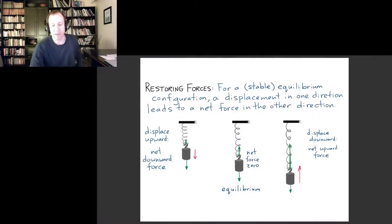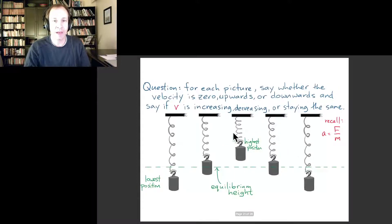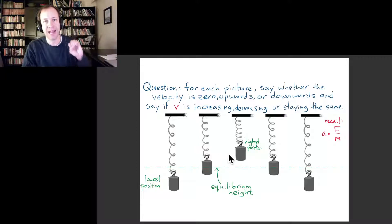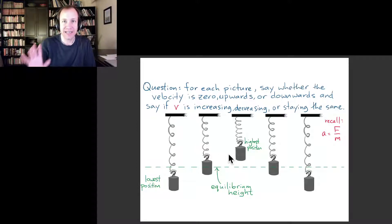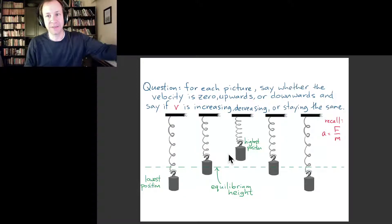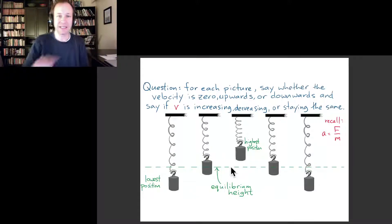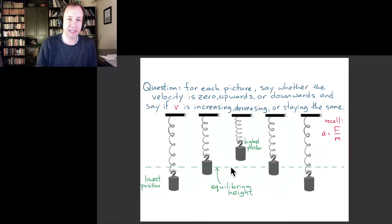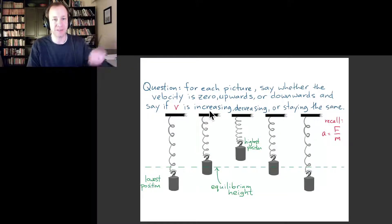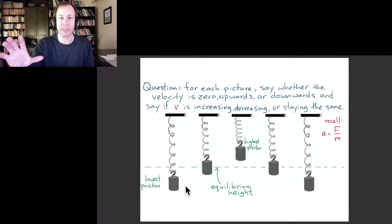What I want you to do before we talk about this in detail is think about at each stage in this oscillation—what the velocity is doing and how the velocity is changing at each time. This is a good example of applying your understanding of Newton's laws. We want to think about what is the velocity at each phase here, and then using Newton's second law and looking at the forces, how is the velocity changing? See if for each position you can say whether the velocity is zero, upward, or downward, and the same with the rate of change. Is V increasing, decreasing, or staying the same? We're going to talk about this at the start of the next video. I think I'll end here.